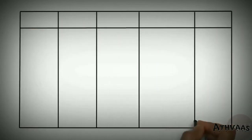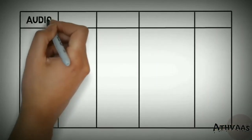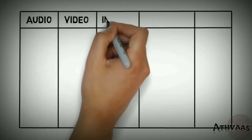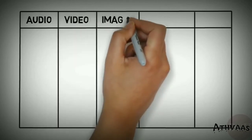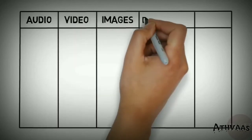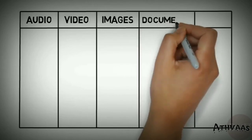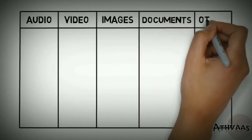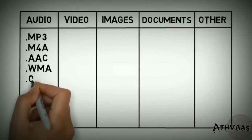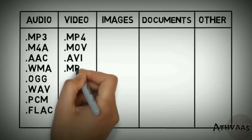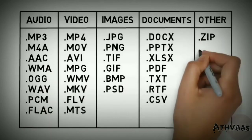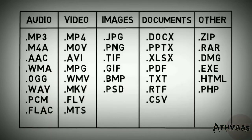Now let us look at different types of file extensions used for different types of data — for audios, for videos, for images, or different types of documents, and other files as well. There are different file extensions for storing the same type of data.